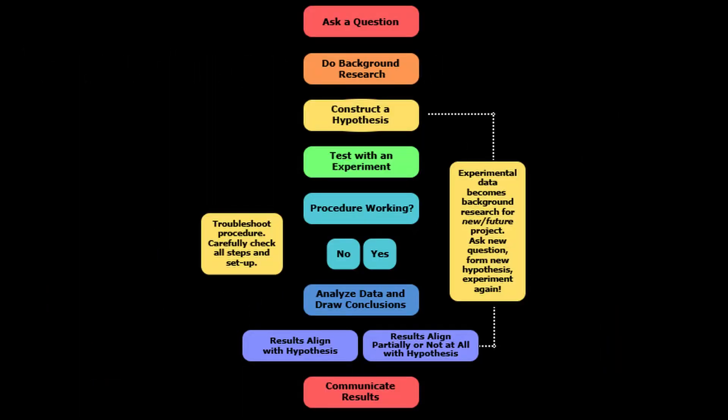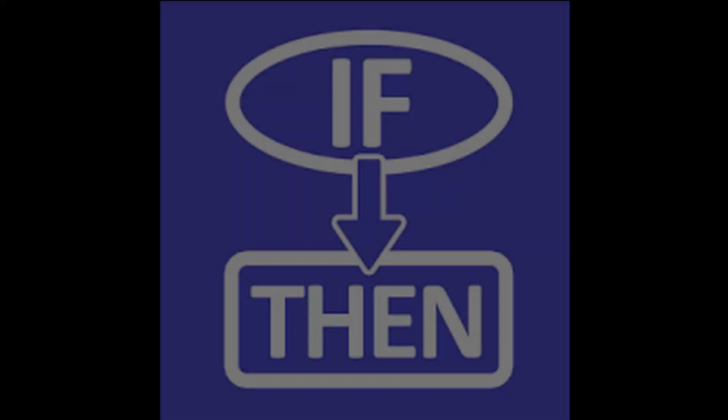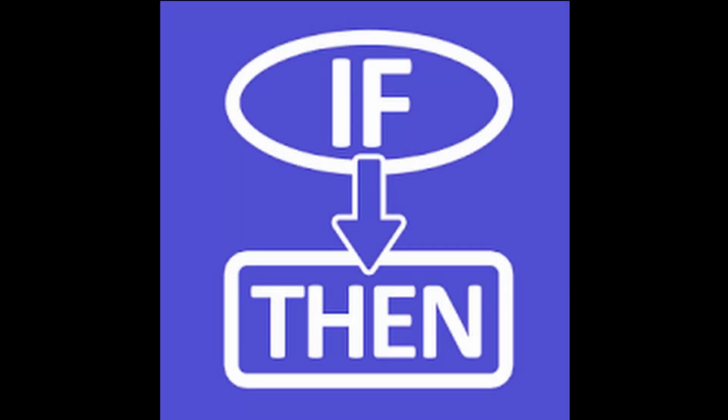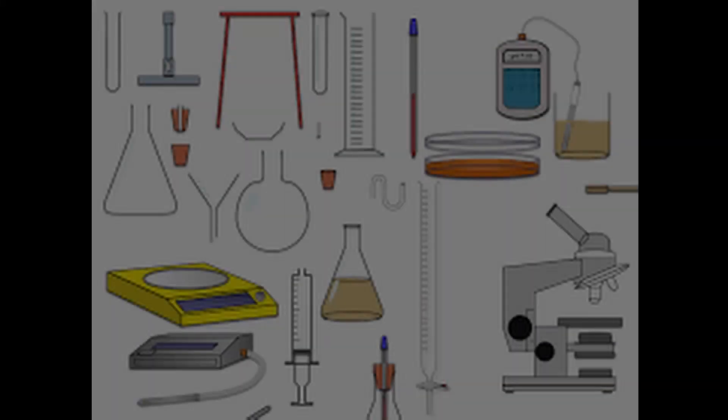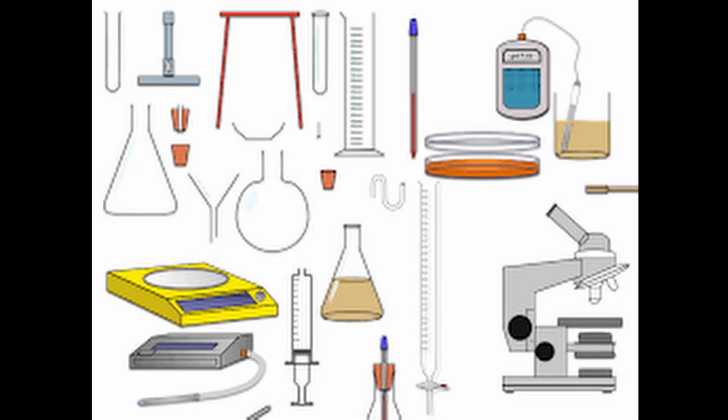The scientific method consists of seven steps. The first step is your aim or your question — what are you planning to test? The second part is your hypothesis or prediction — what do you think the results will be? The third is having a list of all the different apparatuses that you use to perform your experiments.